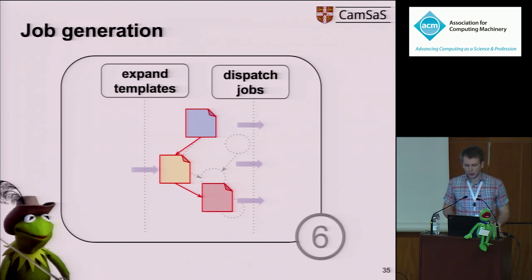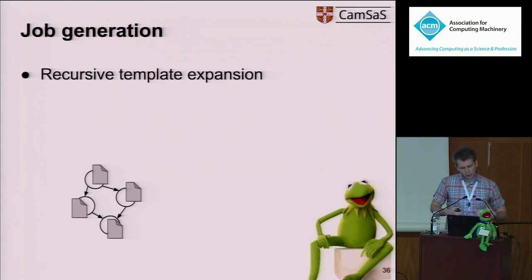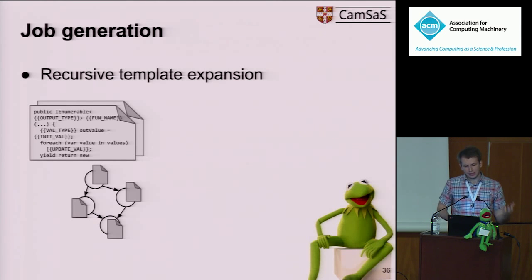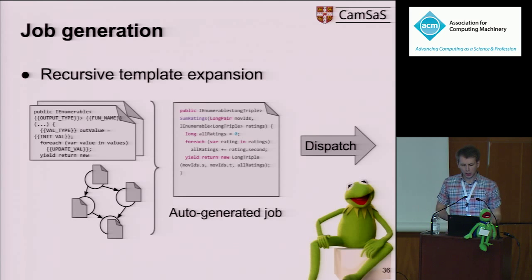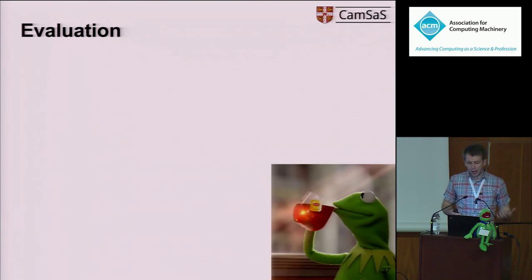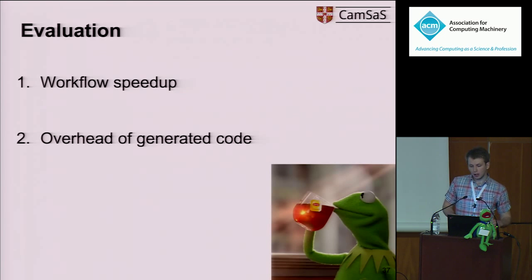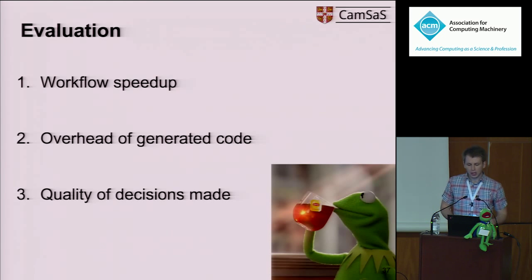Musketeer generates code using template implementations for every combination of operator and back-end execution engine. Whenever we need to generate code for a job consisting of several operators, we recursively expand the templates without adding any overheads. After generating the code, we dispatch the jobs to the back-end execution engines. Having seen the Musketeer pipeline, let's see if it can help Kermit. I'll answer three questions: Can Musketeer reduce workflow makespan? What is the overhead of auto-generated code versus hand-implemented workflows? And how often does Musketeer pick the right system?